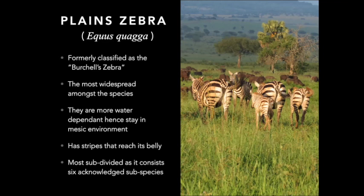The plains zebra is the most widespread species of zebra on the African continent, ranging from as far north as South Sudan all the way down to South Africa. They are more dependent on water than other zebras and tend to stay in areas with easy accessibility to water. They are called plains zebras because their preferred habitat is the plains, and they are the most subdivided zebra species, containing six different subspecies.